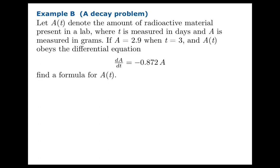In this second problem, we'll see an example of decay. So let A of t denote the amount of radioactive material present in a lab. We're going to measure t in days and A in grams. Suppose you know that A is 2.9 after three days, and you also know that the amount obeys the differential equation dA/dt equals negative 0.872A.